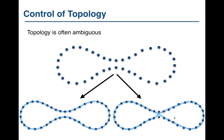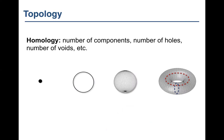The topological tool we use is homology, which comes from algebraic topology and roughly counts the number of components, the number of holes, the number of voids, and generally the number of topological features of a given dimension. As an illustration, a single point has one component, so we have the Betti number β₀ equal to one, signifying one connected component.